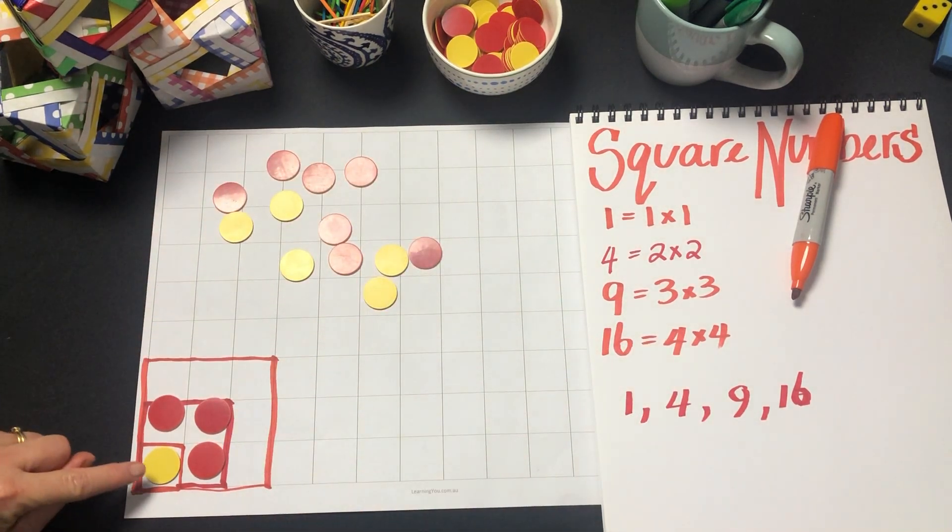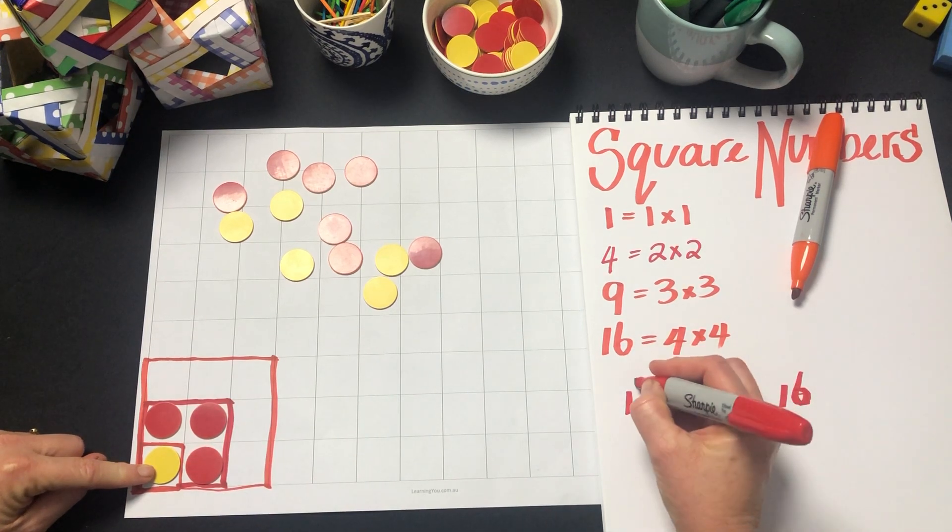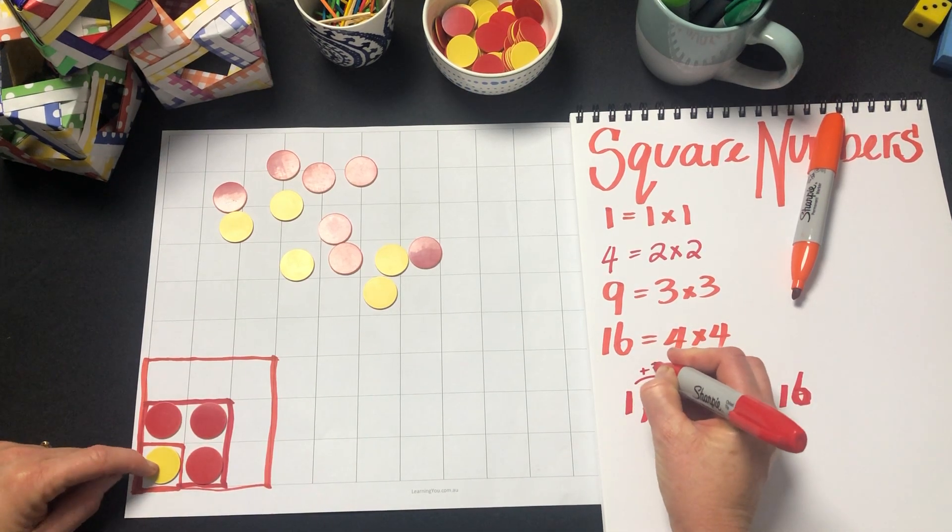And what we can see, if I just move these away, is that when we start with 1, we add 3 to get the 4.